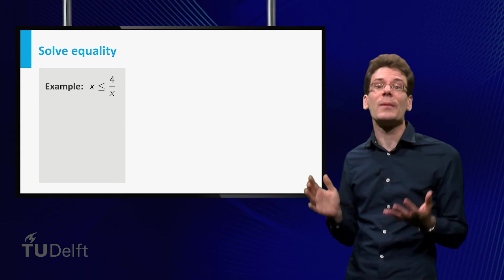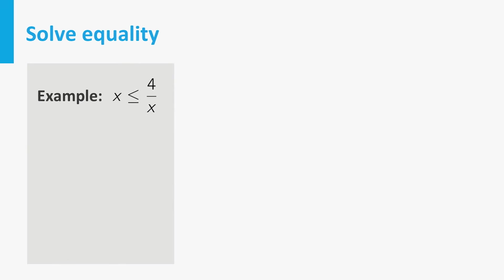First let's look at the x values where both sides are equal. That is, we solve the equation x equal to 4 over x. To get rid of the denominator, multiply both sides by x. We then obtain x squared equal to 4.